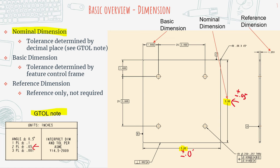Nominal dimensions are really easy to use because it's easy to define the tolerance range. You can have 25 of these dimensions with multiple different decimal places, and all you need is one GTOL note table to convey what the tolerance is for all of the nominal dimensions you have. That's what nominal dimensions are.